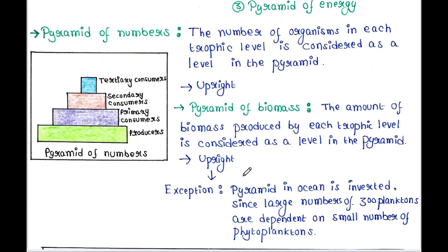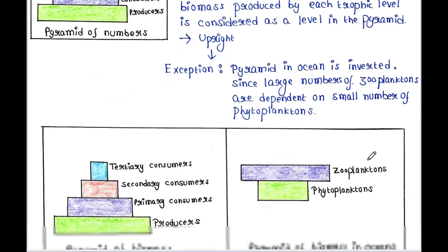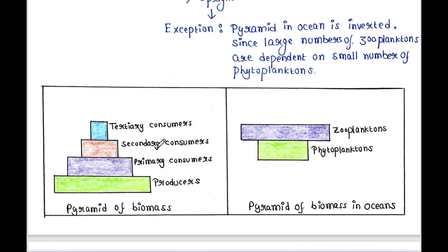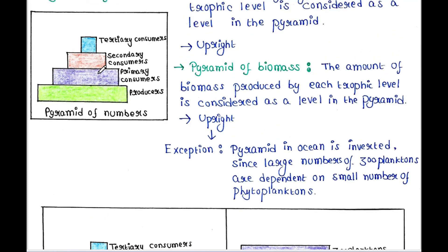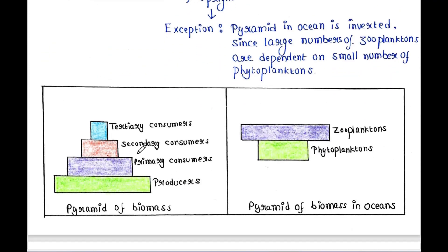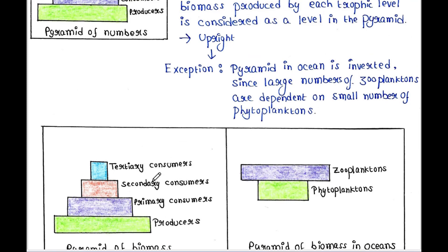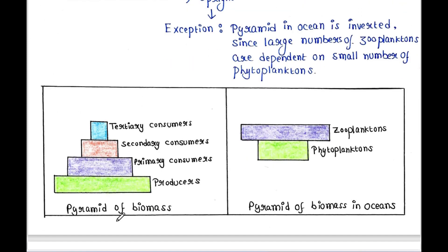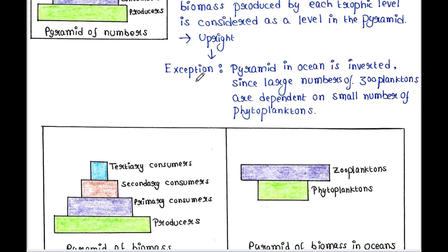Next is pyramid of biomass. The amount of biomass produced by each trophic level is considered as a level in the pyramid. The biomass is highest in producers and lowest in tertiary consumers, just like the pyramid of numbers. This type of pyramid is generally upright.